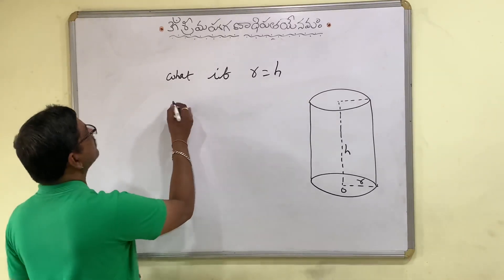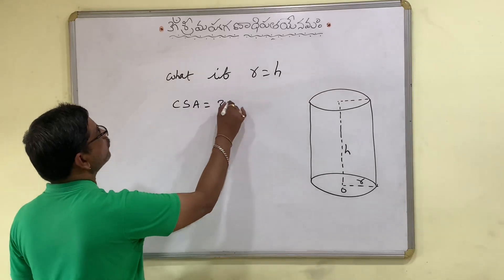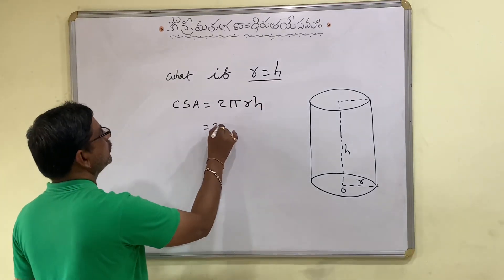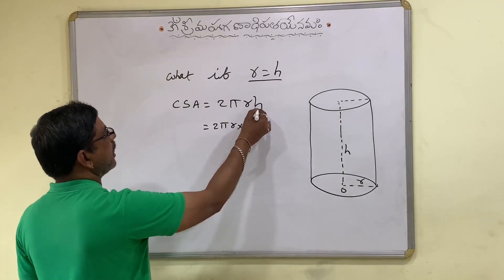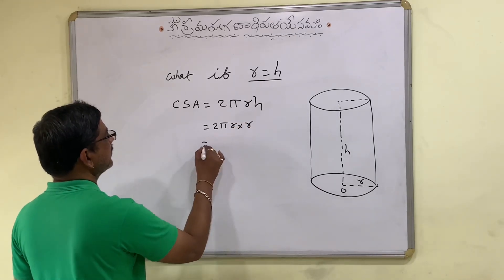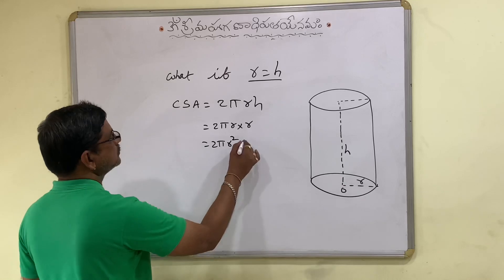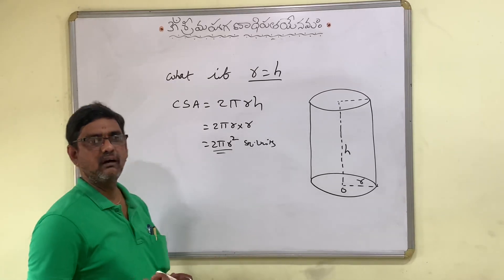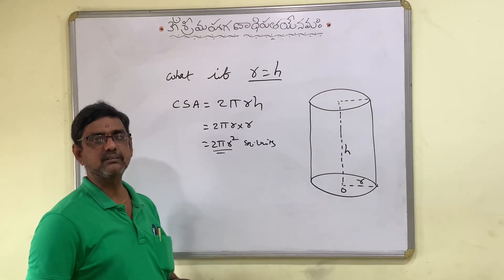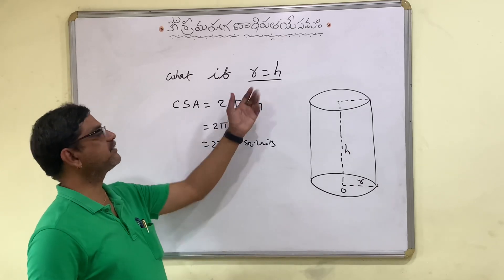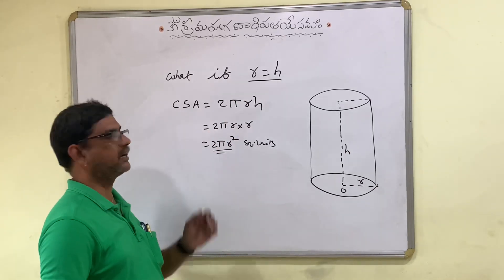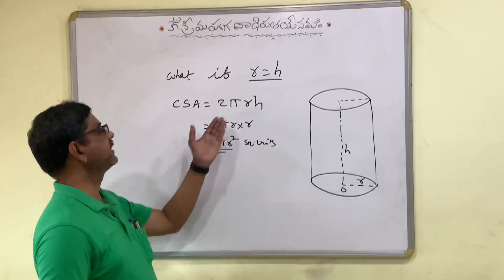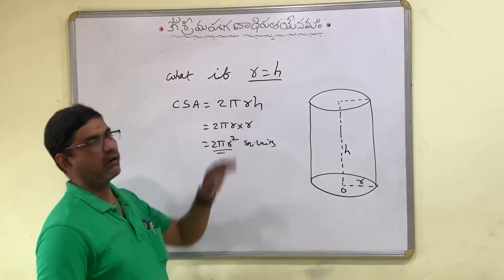We know that the curved surface area of a cylinder is 2πRH. Now what happens if R is equal to H? Inserting R in place of H, it becomes 2πR square units. Notice that 2πR square is the curved surface area of a hemisphere. So if R is equal to H, then the curved surface area of a cylinder is equal to the curved surface area of a hemisphere, if their radii are equal. So 2πRH becomes 2πR square when R is equal to H.